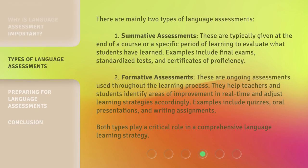There are mainly two types of language assessments. First, summative assessments. These are typically given at the end of a course or a specific period of learning to evaluate what students have learned. Examples include final exams, standardized tests, and certificates of proficiency. Second, formative assessments. These are ongoing assessments used throughout the learning process. They help teachers and students identify areas of improvement in real time and adjust learning strategies accordingly. Examples include quizzes, oral presentations, and writing assignments. Both types play a critical role in a comprehensive language learning strategy.